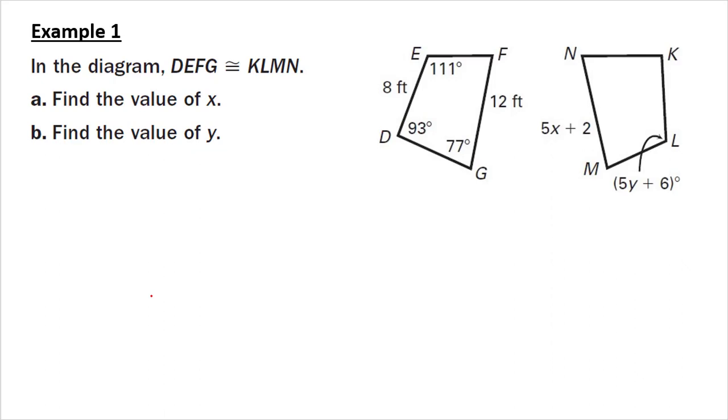Example one: I have DEFG is congruent to KLMN. Find the value of x and y. I think it's easier to find y first. Angle L is my second letter that's listed, so that's congruent to angle E. Angle E is 111, so I'm actually doing part B first.